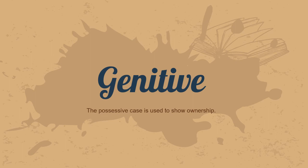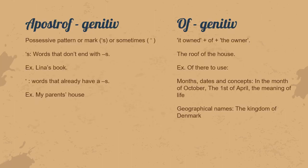The third and last topic is genitive, which is the possessive case used to show ownership. There are different types of genitive. First, apostrophe genitive: we use apostrophe -s for words that don't already end in -s, for example 'Lena's book'. We use only an apostrophe for words that already end in -s, for example 'my parents' house'.